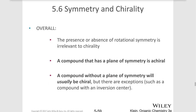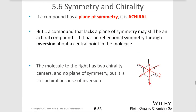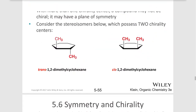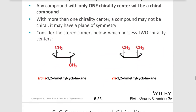Rotational symmetry is irrelevant to chirality. For example, if you rotate this molecule, it might appear that it would be achiral, but that is irrelevant to the fact that it is chiral. It's still non-superimposable on its mirror image and therefore is chiral.